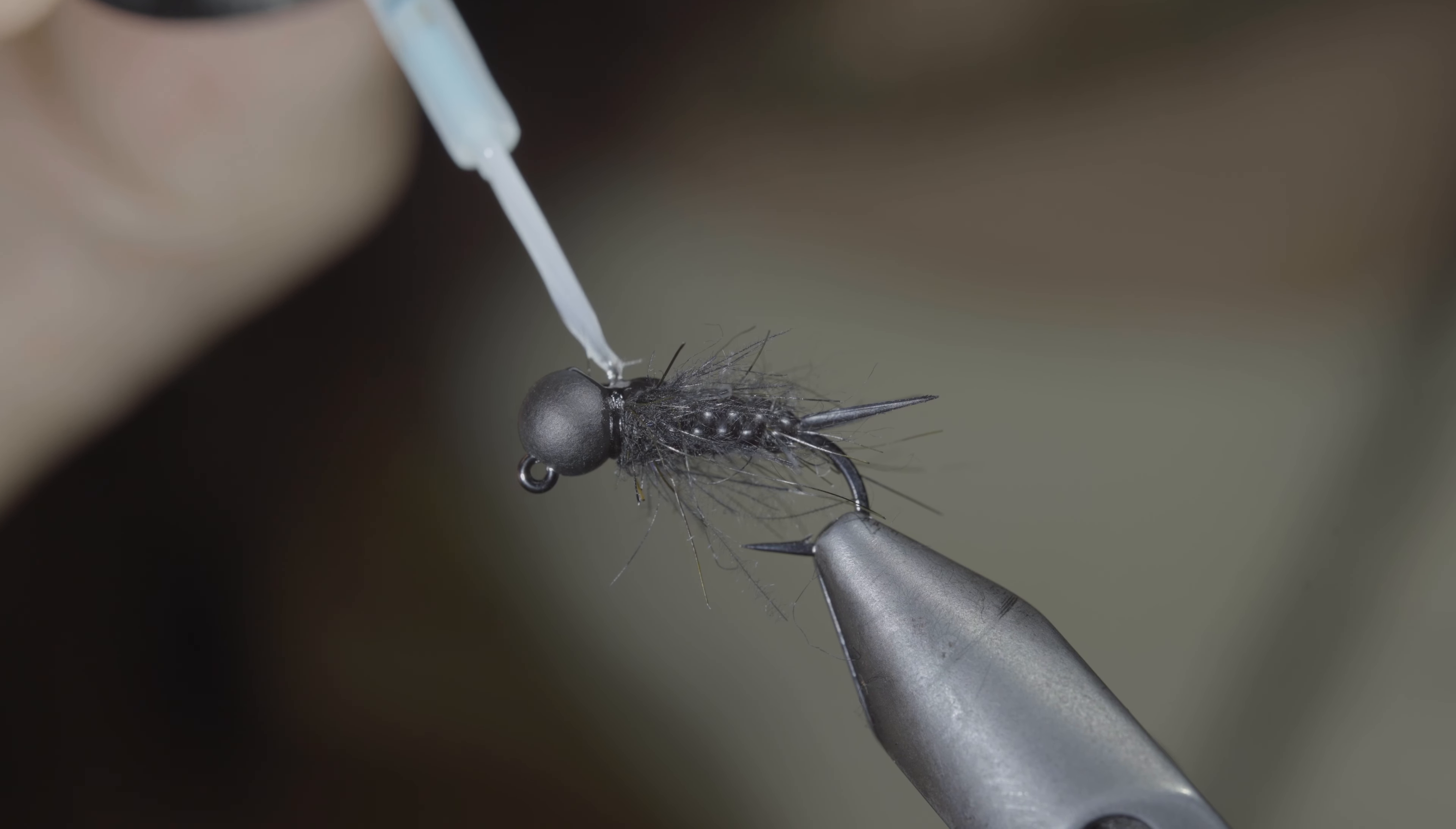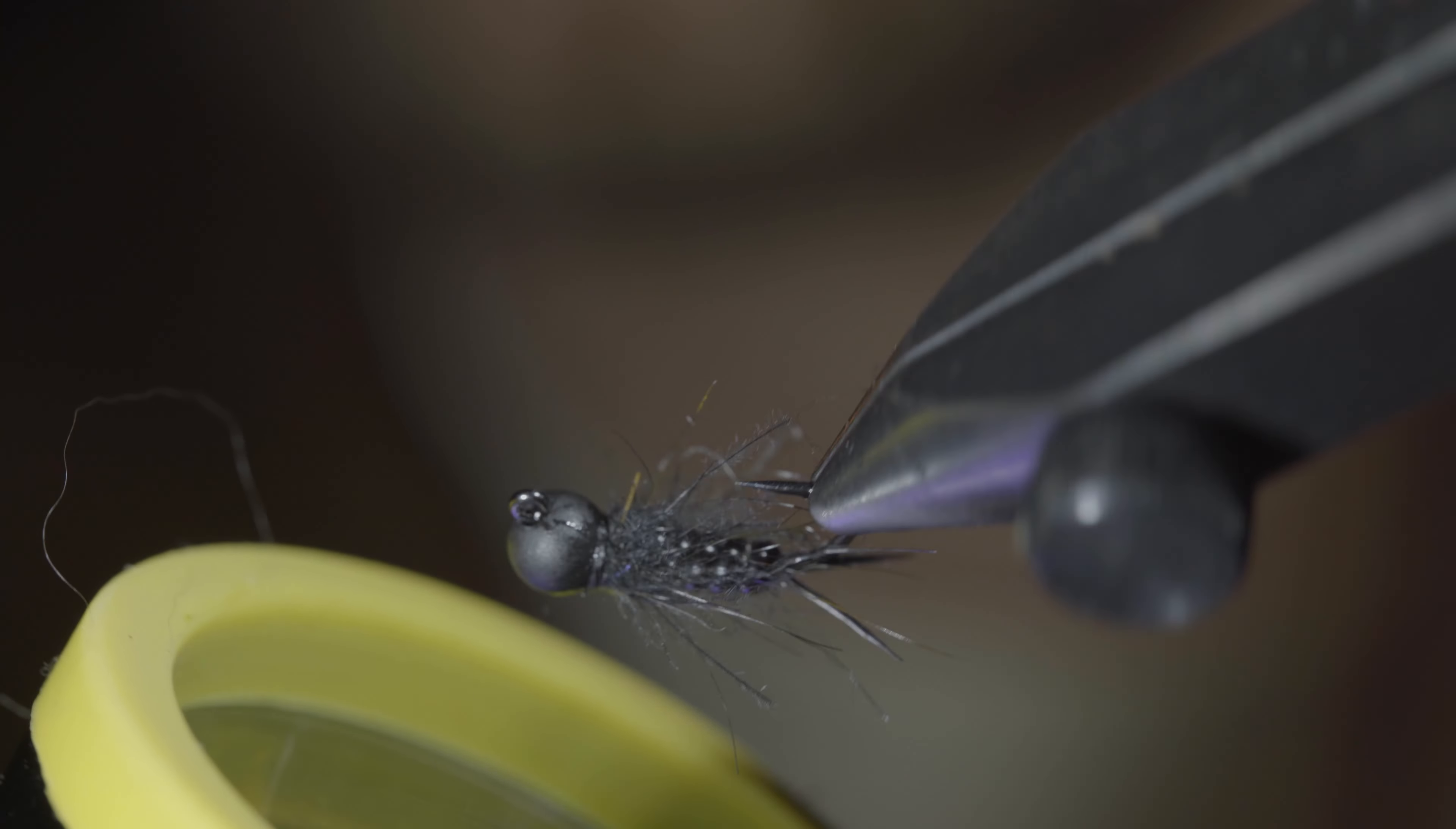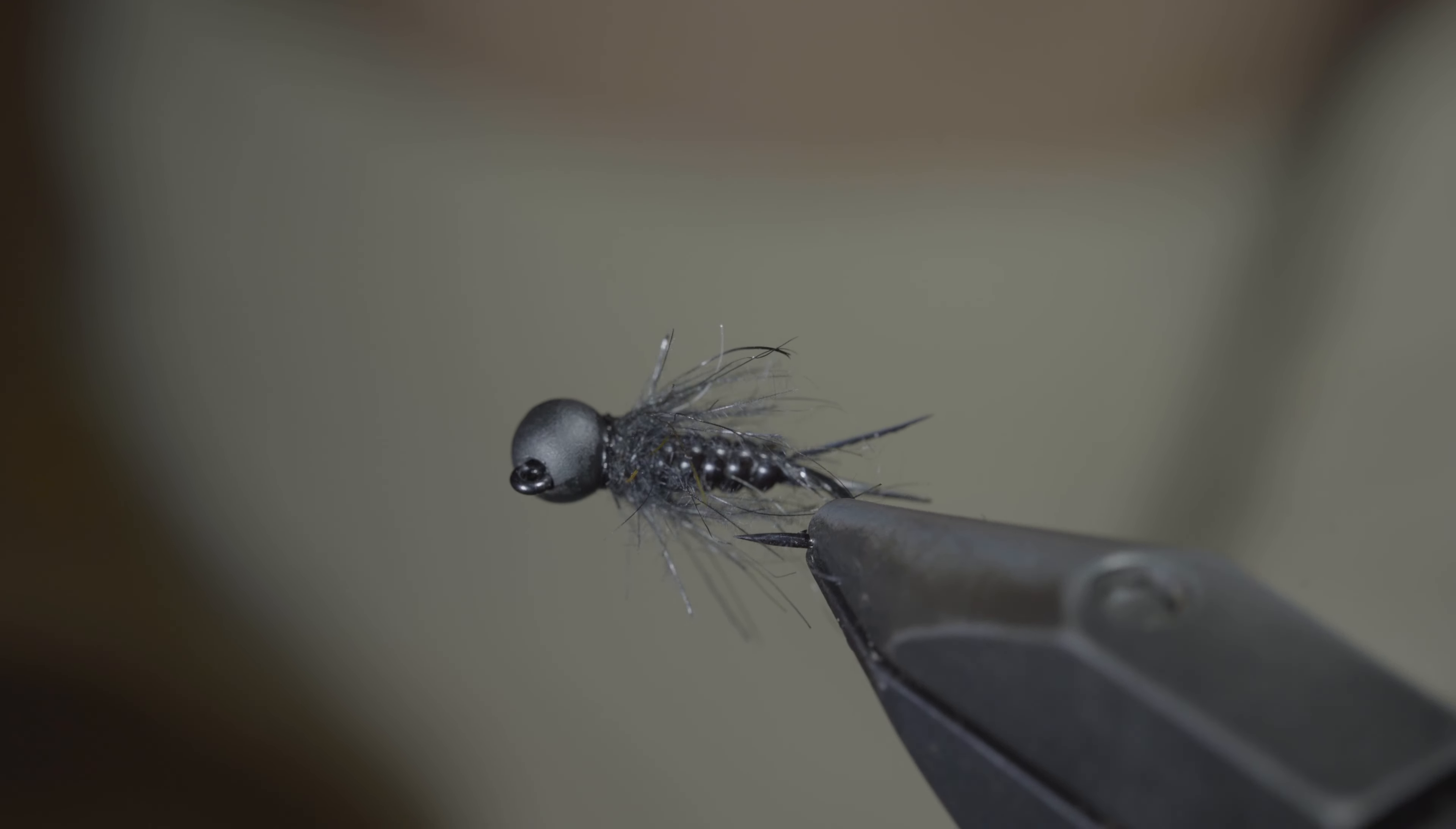Grabbing some more UV resin and painting over the back of our fly. This will help give it some shine as well as add some durability to our pattern. Fix in place with the UV light.